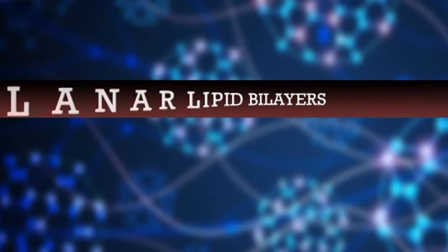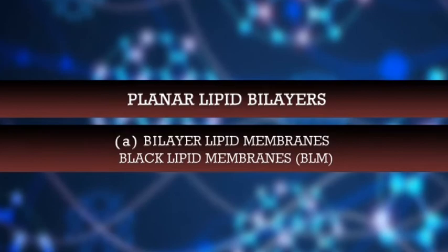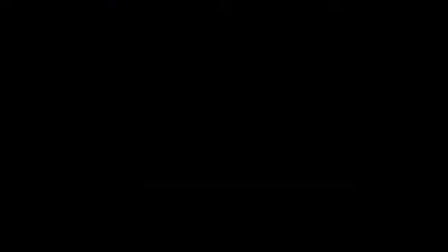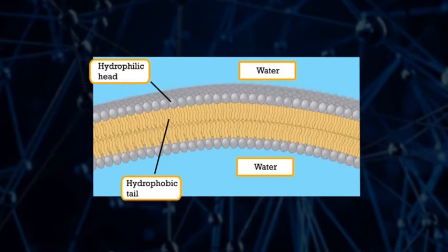Now let's study the planar lipid bilayers — bilayer lipid membranes or black lipid membranes. Ever since it was discovered that biological membranes have a core of a biomolecular sheet of lipid molecules, lipid bilayers have been a model laboratory for investigating physicochemical and functional properties of biological membranes. Stable bilayer lipid membranes, or BLM, have been reported in 1962 by Mueller and co-workers. Due to the amphiphilic nature of phospholipids, they spontaneously form lipid bilayers in a water phase.